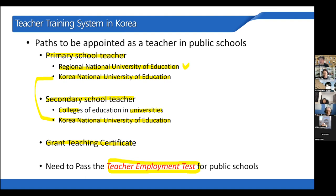Yes, because I graduated from a regional national university of education, I am a primary school teacher. But I cannot be a secondary school teacher. However, there is one way to be both: those who graduate from Korea National University of Education can select a double major in both primary education and secondary education, getting two teaching certificates.